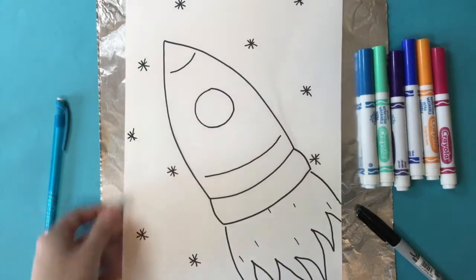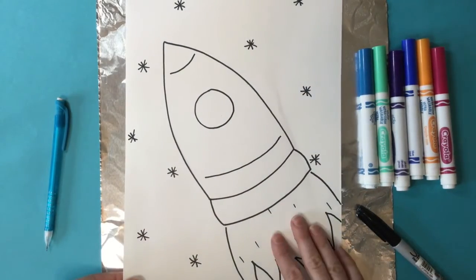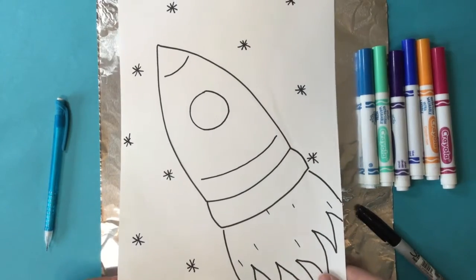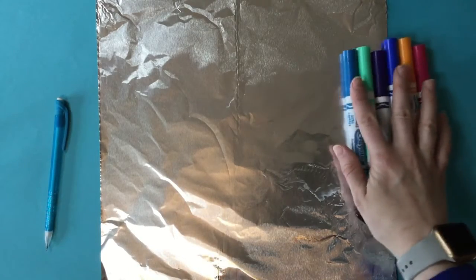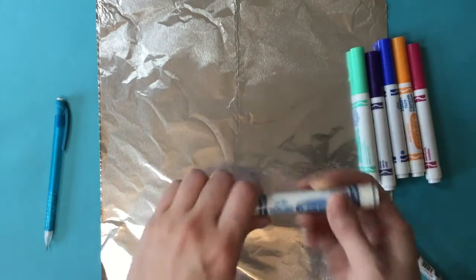I went ahead and already drew just a really quick little rocket ship drawing, super simple, and I just drew it with my sharpie. Once you've got your drawing ready, then you're ready to get started with your markers.